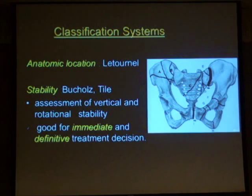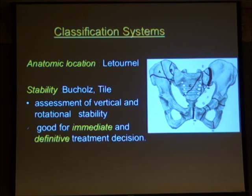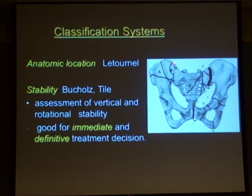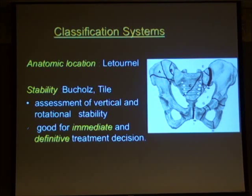The Letournel and NAL classification is an anatomical classification system. It divides the pelvic ring into different anatomical sites and gives them a letter. So 'A' would be an iliac wing fracture, 'B' would be a fracture at the posterior iliac going into the SI joint, and so on — each fracture gets a letter relating to its anatomical location on the pelvis.